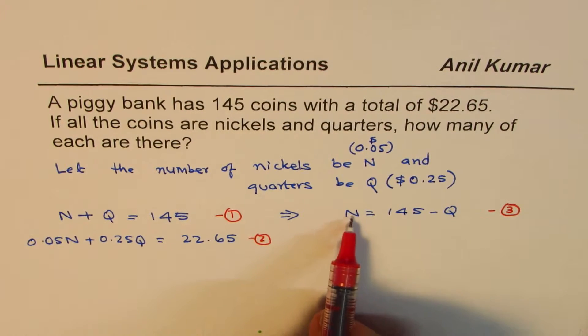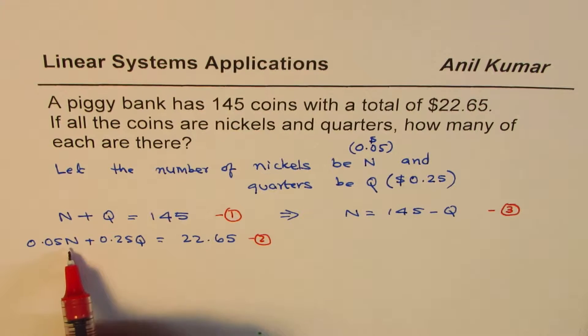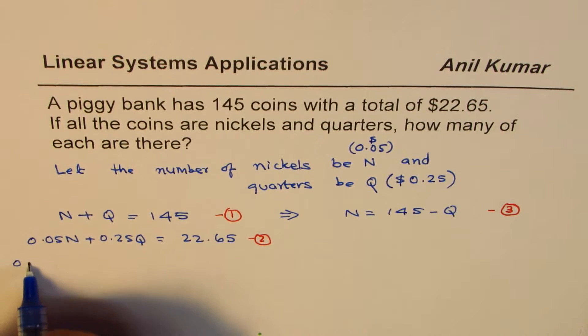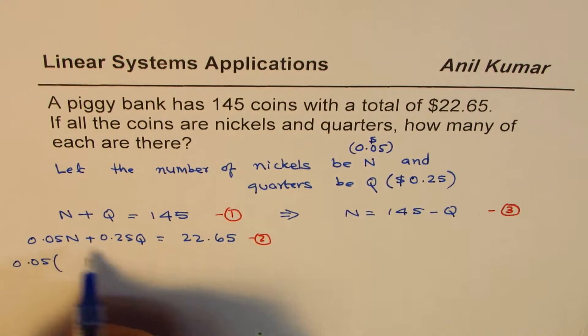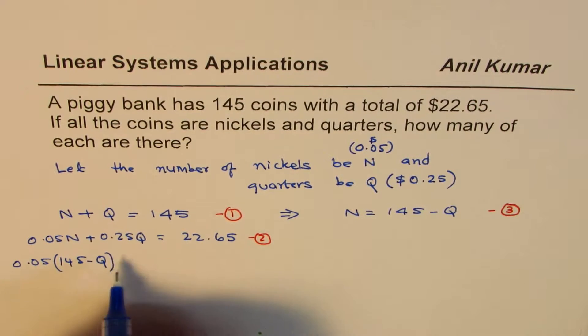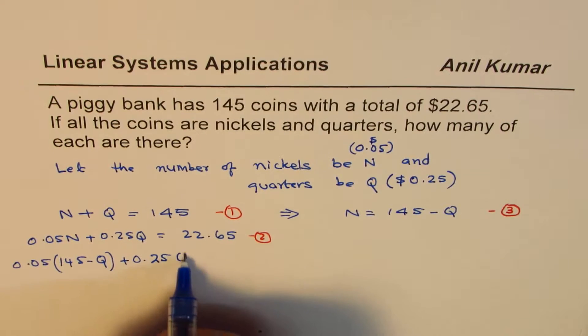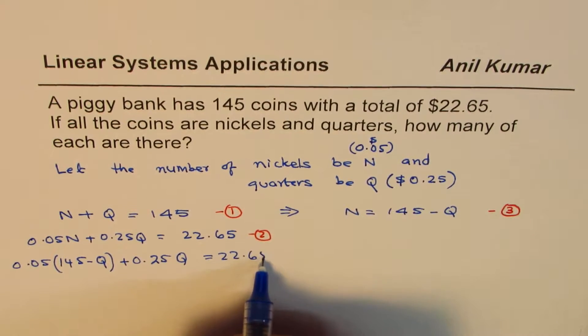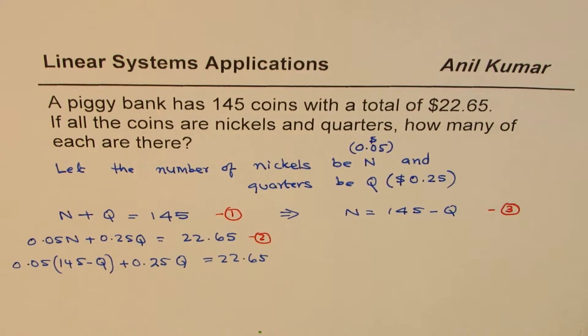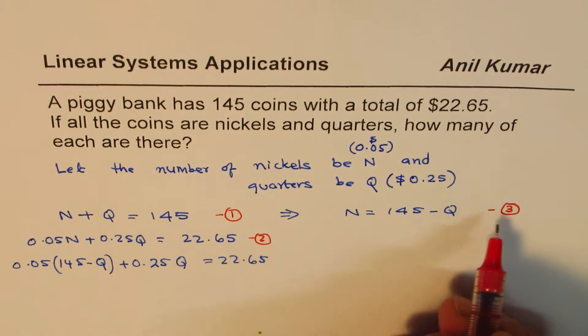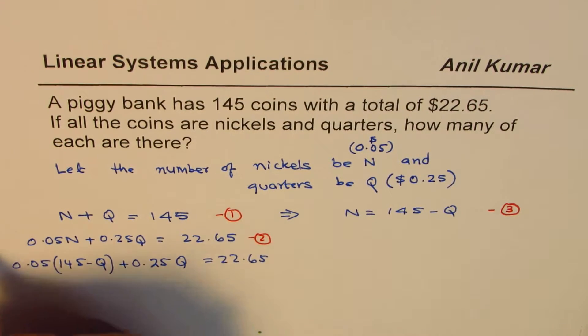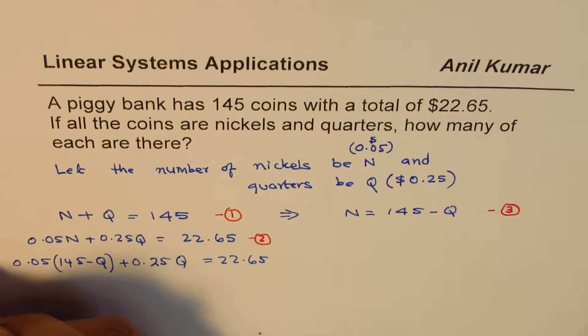Now, we can substitute this value of nickels in the second equation. So let's do that. So what we'll get here is 0.05 instead of nickels, I'm writing 145 minus Q. And we already have 0.25 quarters equals to 22.65. So what did we do? We substituted 3 in 2.